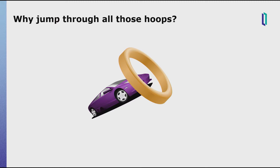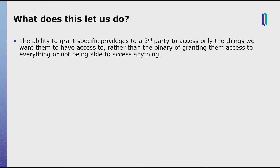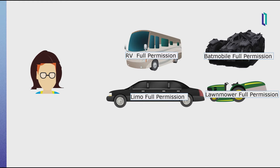So that was a long story about access. Why does it matter? Why do we have to jump through all those hoops? It gives us the ability to grant specific permissions to a third party to access only the things we want them to have access to, rather than the binary of granting them access to everything or nothing. Before this, there was no system to grant access to specific resources. The only way to grant access to other people was to have them put on a wig and pretend to be you — giving them full access to all of the things, whether that's what you wanted or not. But all this is a metaphor.